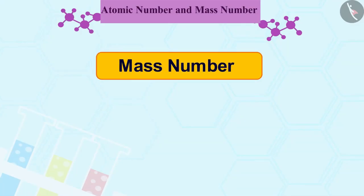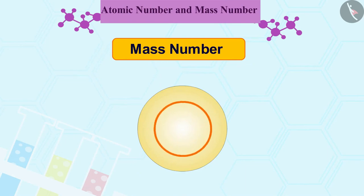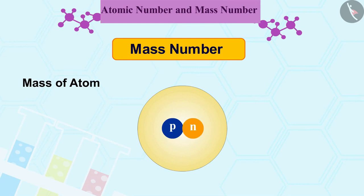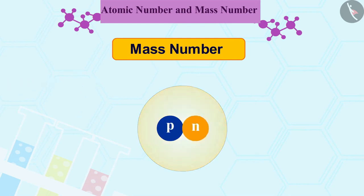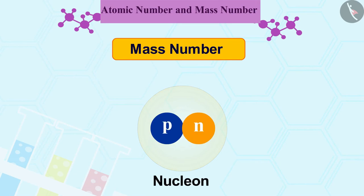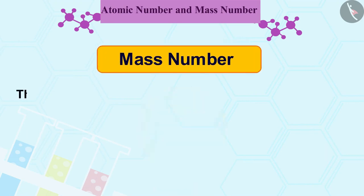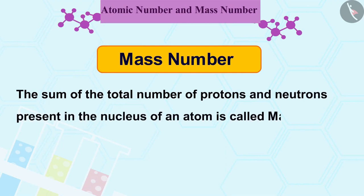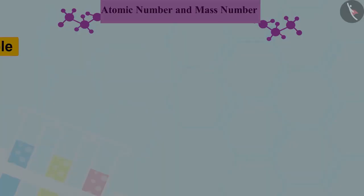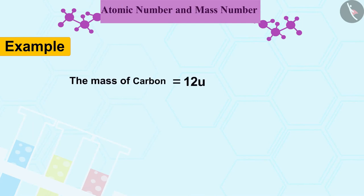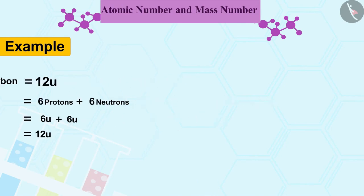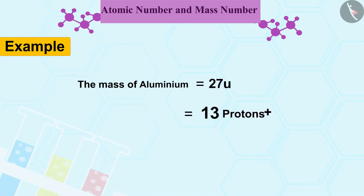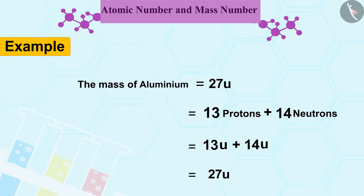Let us go ahead and see what is a mass number. Mass of an atom is practically due to the protons and neutrons which exist in the nucleus. Hence, protons and neutrons are also called nucleons. The sum of the total number of protons and neutrons present in the nucleus of an atom is called mass number. For example, the mass of carbon is 12u because it consists of 6 protons and 6 neutrons. Similarly, the mass of aluminium is 27u because it has 13 protons and 14 neutrons.